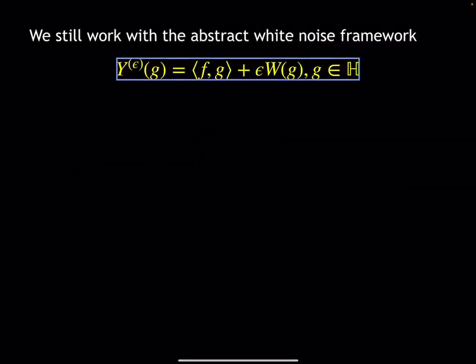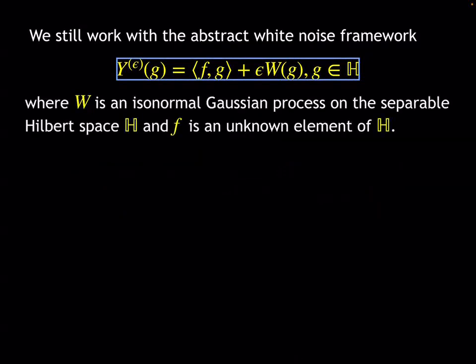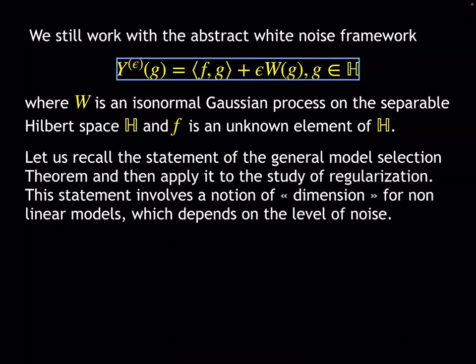We are working within this abstract white noise framework. You have observations y of j, which is merely the scalar product of an unknown quantity f with j, plus some Gaussian noise epsilon times w of j, where w is an iso-normal Gaussian process on the separable Hilbert space H. We shall begin by stating again the general model selection theorem, and after that we shall apply it to the study of regularization.